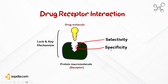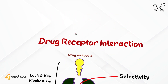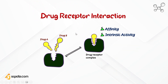The receptor possesses two important properties: first, it is highly selective, and second, it is highly specific, meaning it will select the drug to which it binds and will produce a specific action each time it binds with the same drug. The receptor and drug interaction is similar to a lock-and-key mechanism — the receptor acts as the lock while the drug is the key.